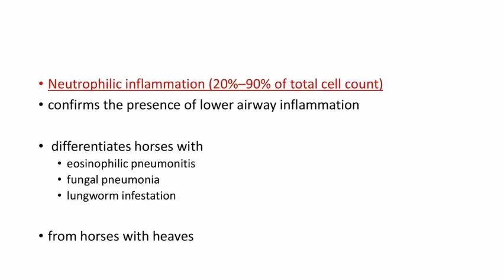Neutrophilic inflammation of 20 to 90% of total cell count confirms the presence of lower airway inflammation. BAL also differentiates horses with heaves from those with eosinophilic pneumonitis, fungal pneumonia, and lungworm infestation.